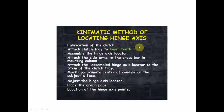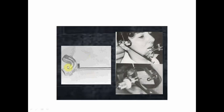The hinge axis locator is adjusted accordingly. A graph paper is used to trace the opening and closing movements of the patient, and the exact location of the center of condylar rotation is plotted on this graph paper. Using the hinge axis locator, when the patient opens and closes the mouth, the exact location of the center of condylar rotation is marked and the true hinge axis is measured.